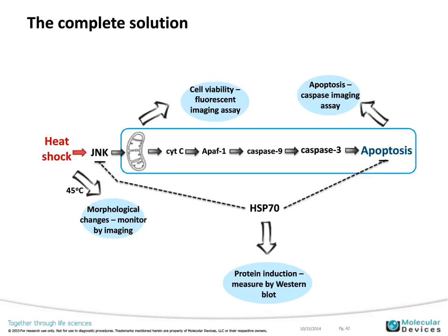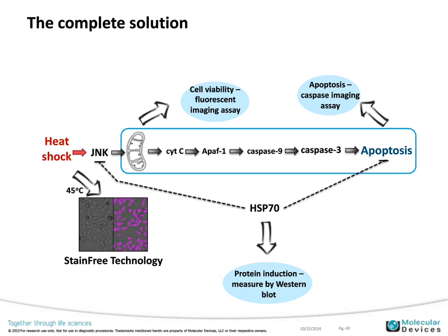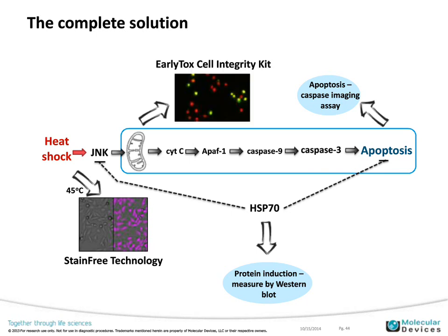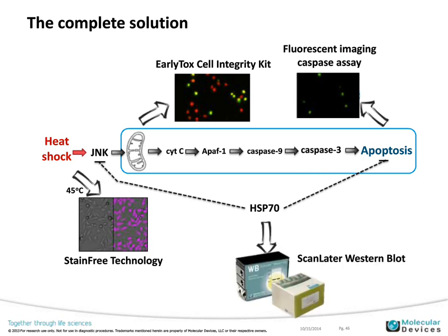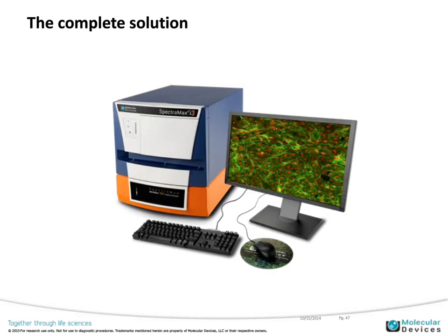In conclusion, we offer a complete solution for looking into pathways on the SpectraMax system: cell morphology and counts using stain-free technology without any dyes; cell viability using the EarlyTox Cell Integrity Kit with two-color fluorescence; apoptosis monitoring via fluorescent imaging caspase assay on the MiniMax; and protein induction using the ScanLater Western Blot system. All of this is done on the SpectraMax system — imagine what you could do with a system like this.